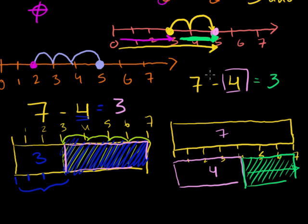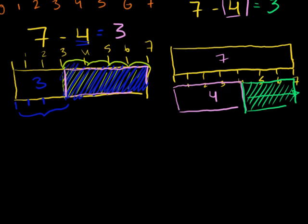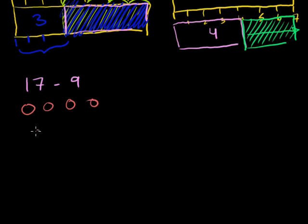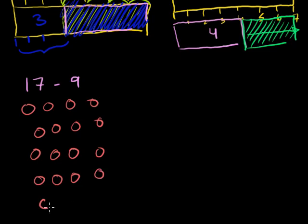That's all a bit of review from the last video. Now I also want to start tackling slightly larger problems — you'll see the number line applies just as well. So let's do 17 minus 9. The slower way is to draw 17 objects. Let's say I have 17 chips: 1, 2, 3, 4, 5, 6, 7, 8, 9, 10, 11, 12, 13, 14, 15, 16, 17.